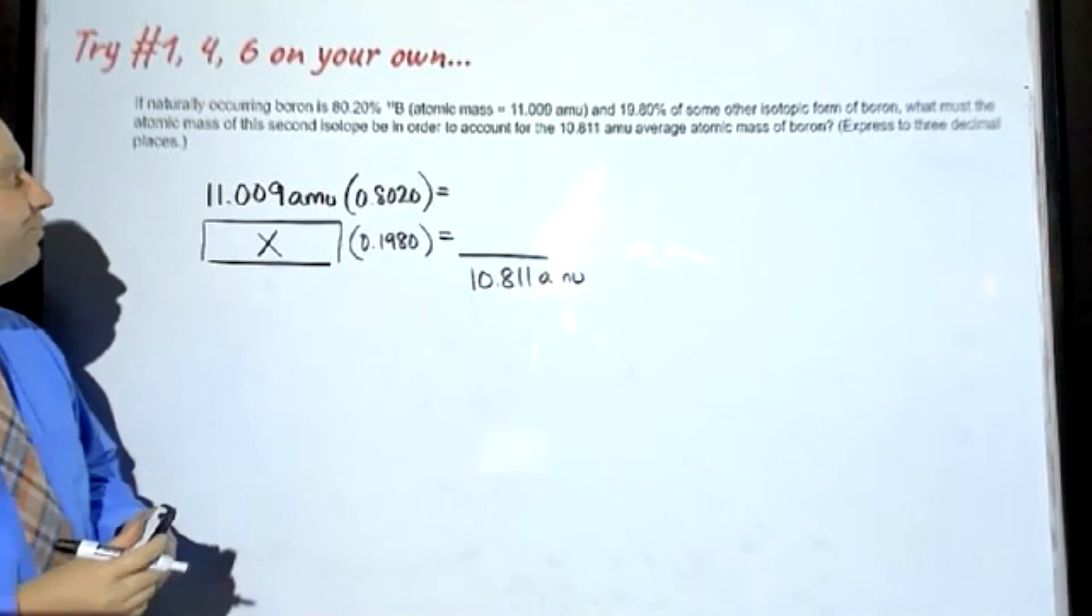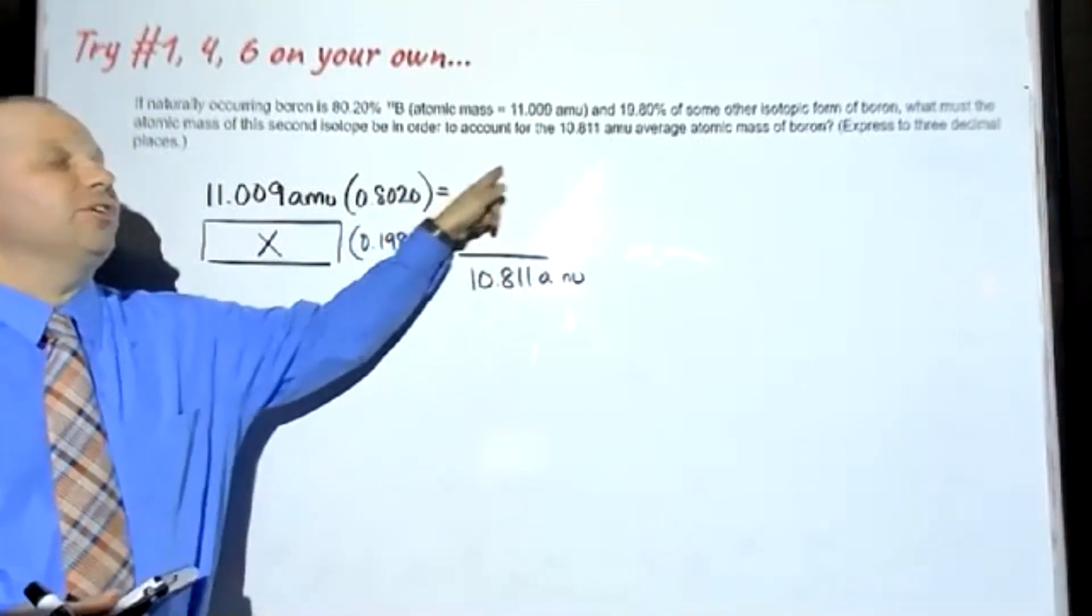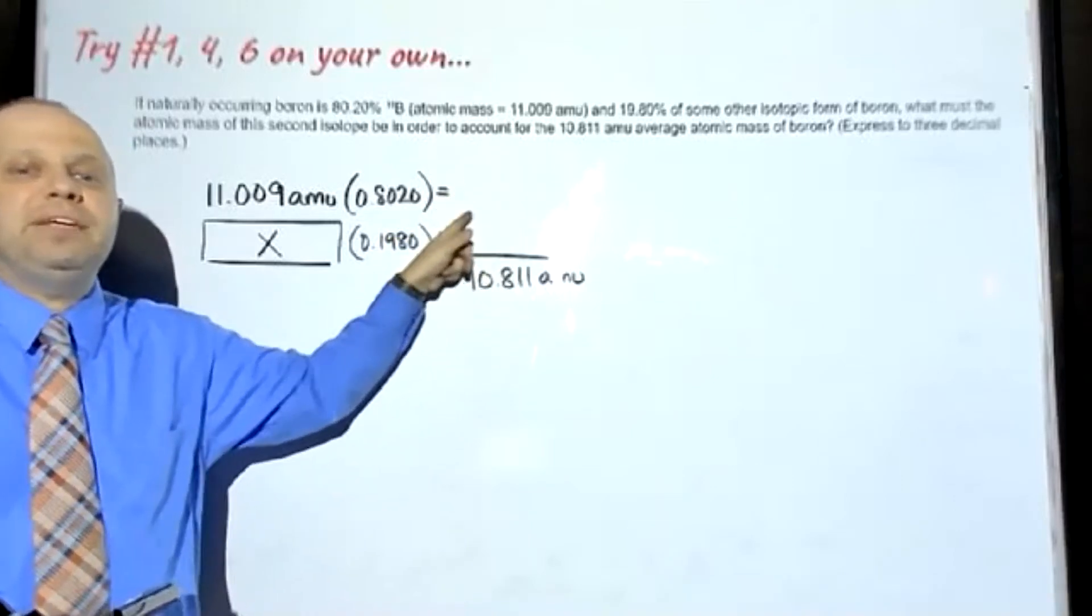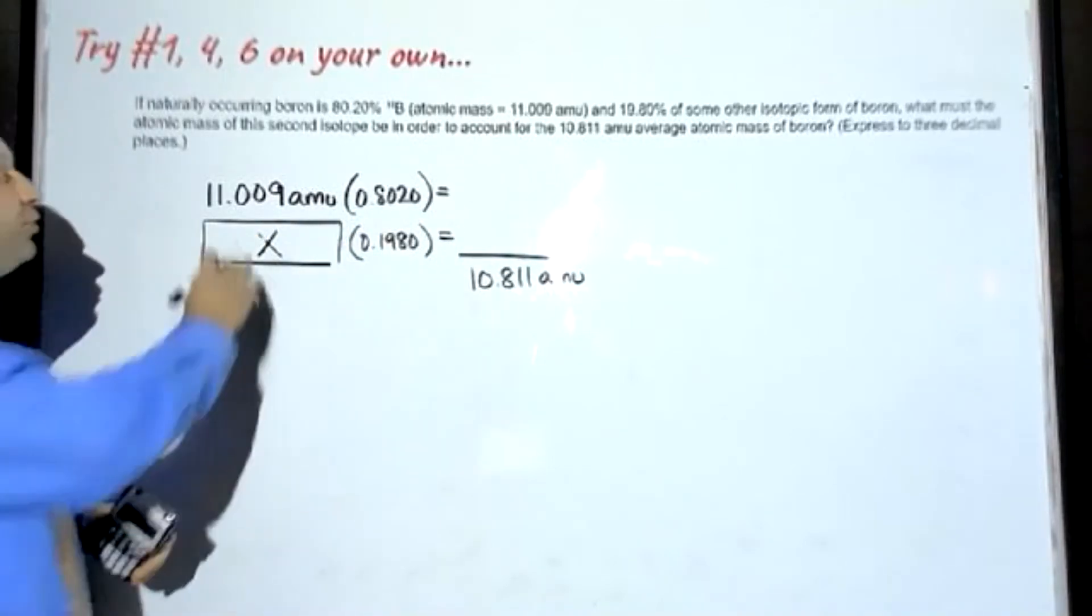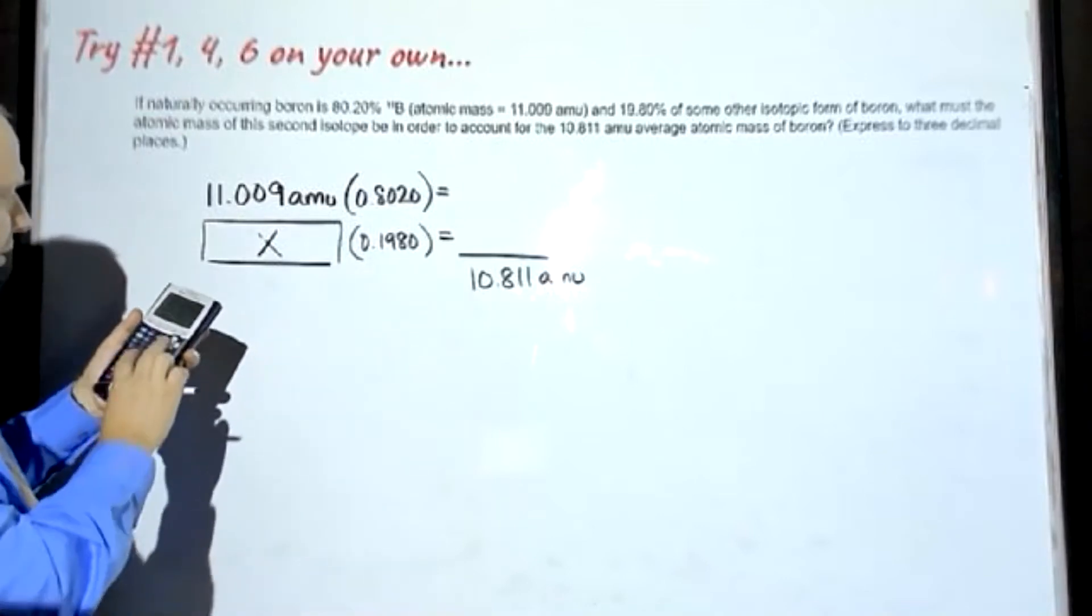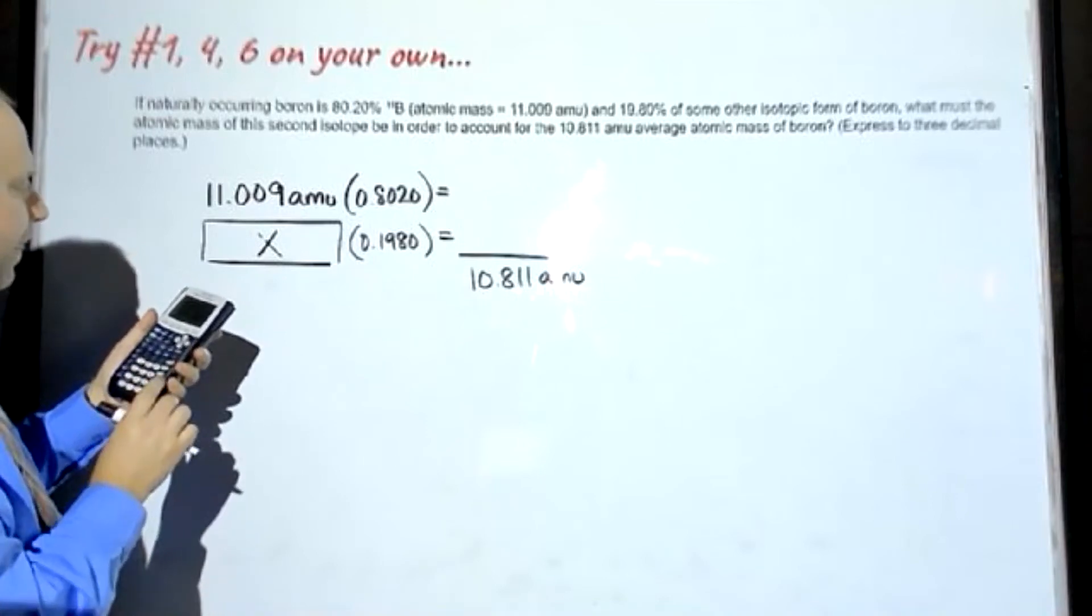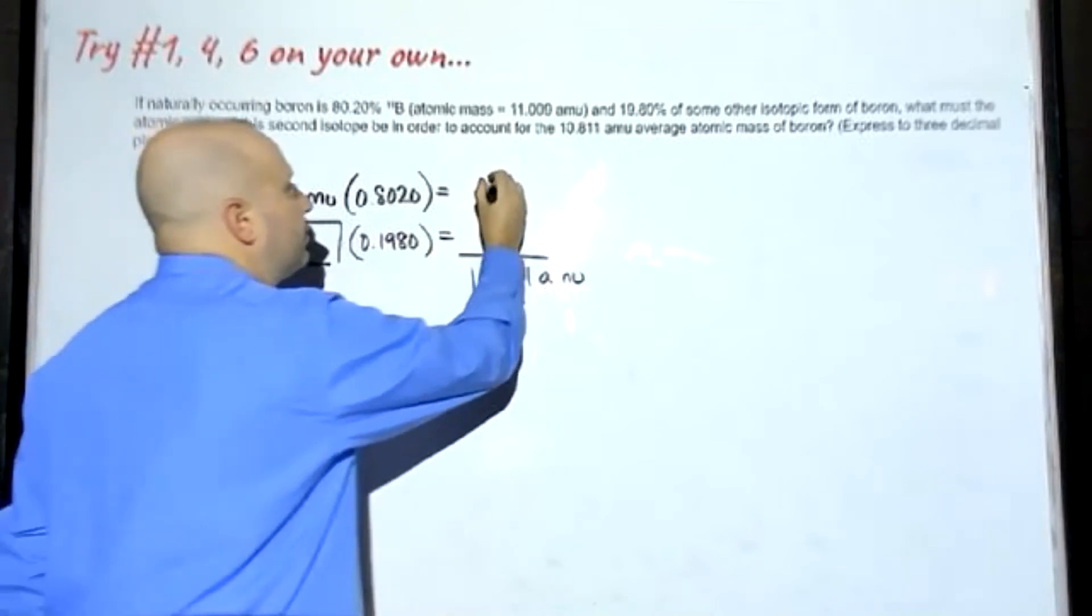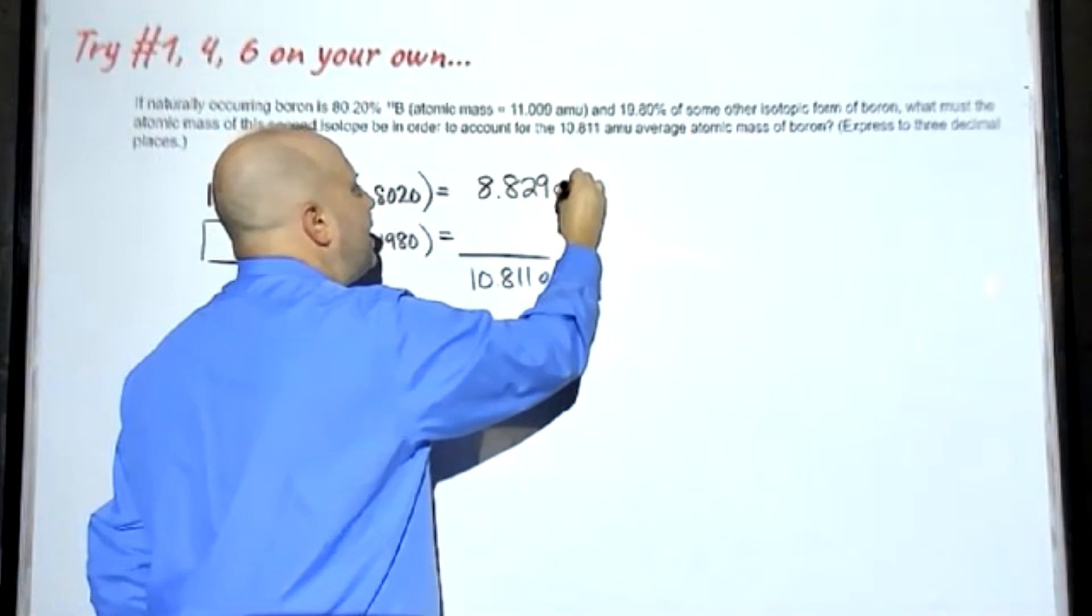In order to account for the fact that the average atomic mass is 10.811 AMU, what we're going to need to do is first figure out what we do know. Then we can subtract those two to figure out the missing piece, and then solve this equation for X. So let's go across the top here first. We have 11.009 times 0.8020. That turns out to be 8.829 AMU.